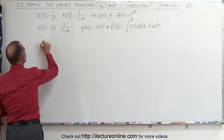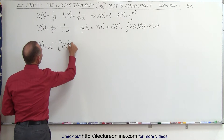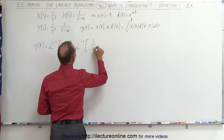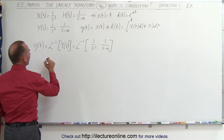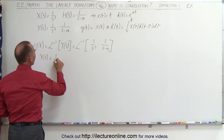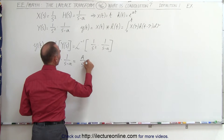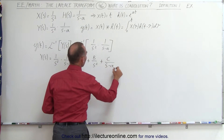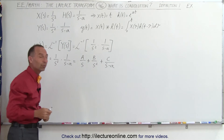We can say that y(t) is equal to the inverse Laplace transform of Y(s), which is equal to the inverse Laplace transform of the product of 1/s² times 1/(s - a). We're going to write Y(s) as being equal to 1/s² times 1/(s - a), which can be decomposed as A/s plus B/s² plus C/(s - a), and solve for A, B, and C, then take the inverse Laplace transform of each of these three individual portions.